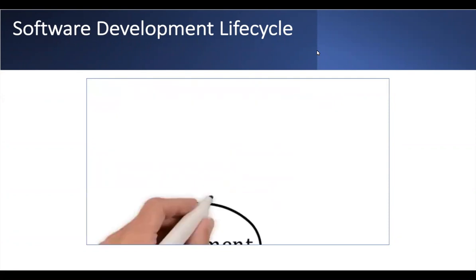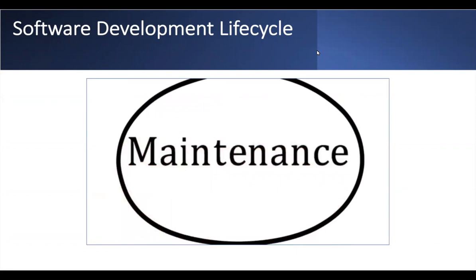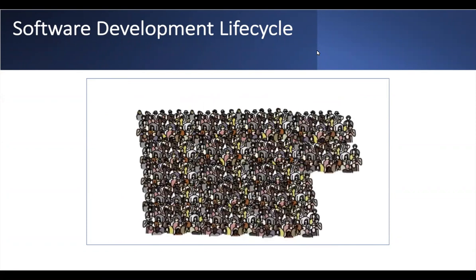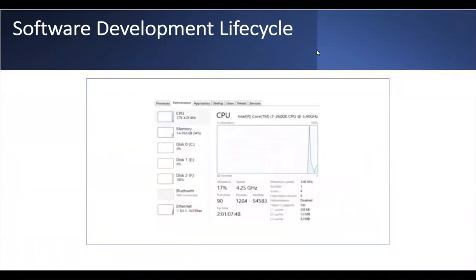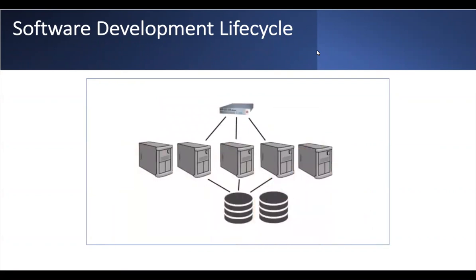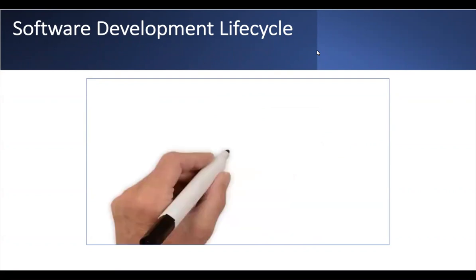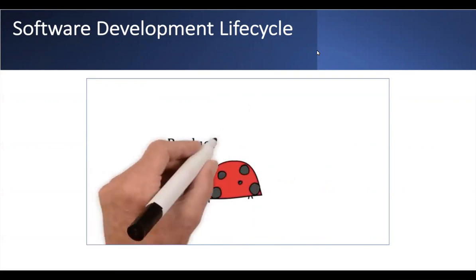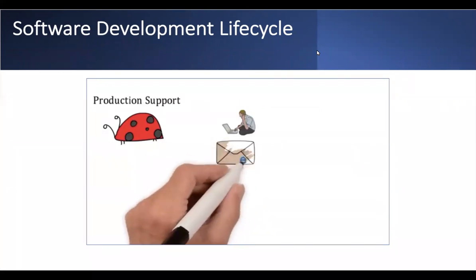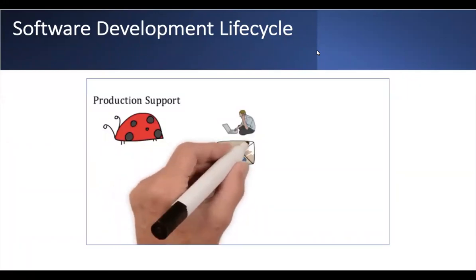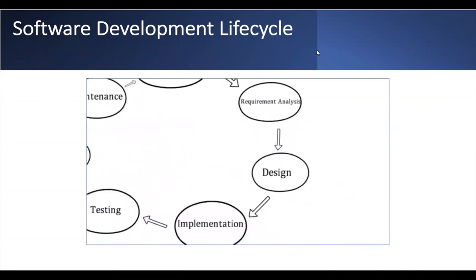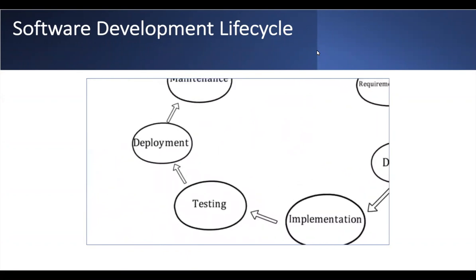The final phase is maintenance. Imagine the application becomes so successful that millions of users are logging in — the team must maintain servers, monitor load and stress, and potentially scale to larger servers and databases. Bugs found in production require production support: users email with issues, the team investigates, writes up a bug report, gets it resolved, and does another deployment to production. To summarize, the seven phases are: planning, requirement analysis, design, implementation and coding, testing, deployment, and maintenance.